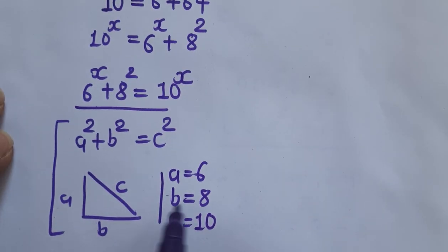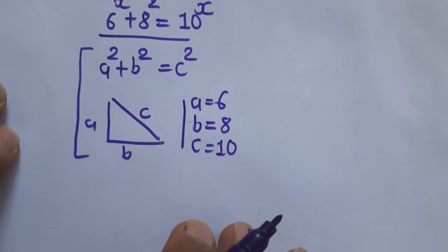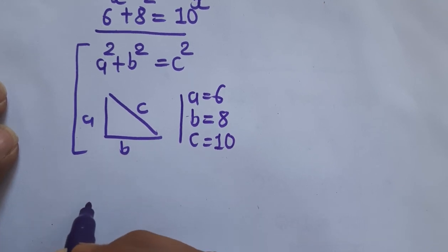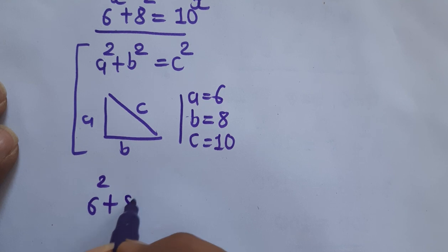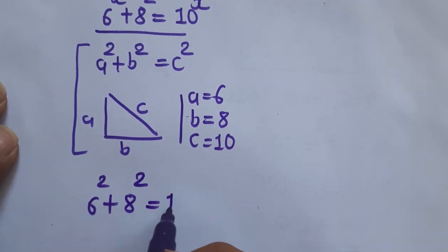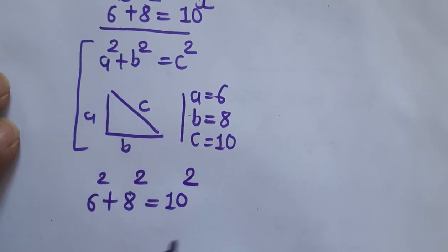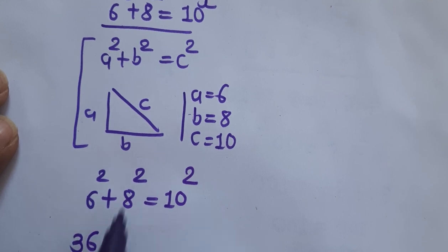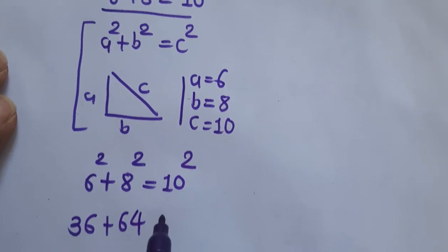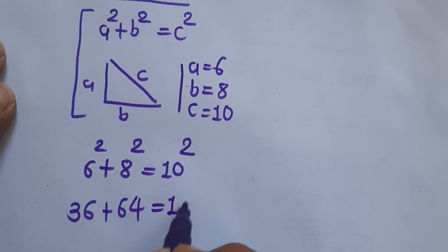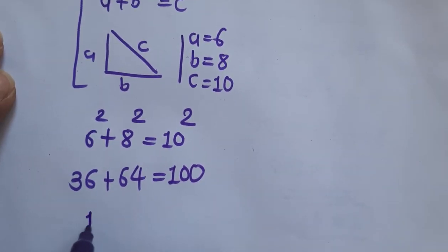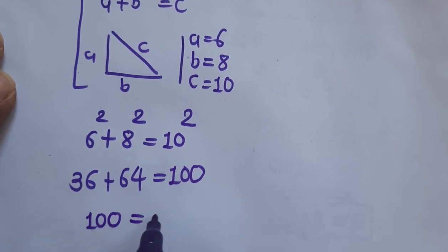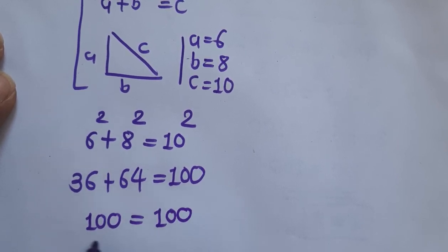So we will put these values in this Pythagoras equation. So 6 square plus 8 square is equal to 10 square. So 6 square is 36, 8 square is 64 and 10 square is 100. So if you will add both of these, then we will have 100 on left side and on the right hand side also we have 100.